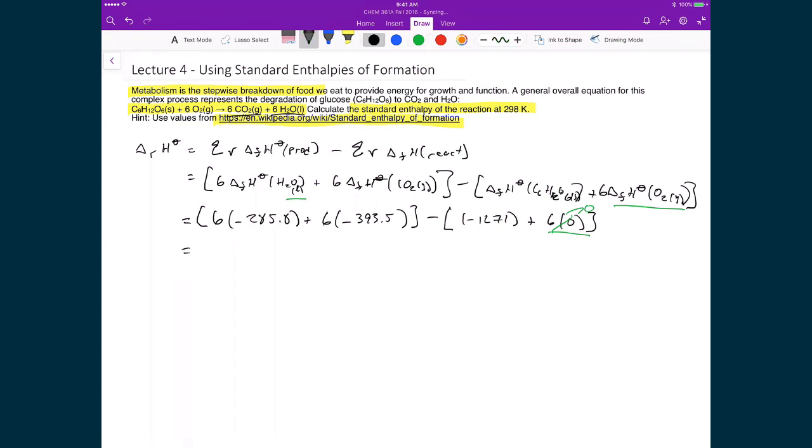From here I can then just start to evaluate. I just have algebra to complete now. I have negative 1,714.8. To that I'm going to add negative 2,361. And from that I'm going to add, and the minus minus cancels out, so I get 1,271. And that means then that the heat from this reaction is negative 2,804.8 kilojoules per mole. And where these units come from is that each of these numbers that I substituted in are in kilojoules per mole.